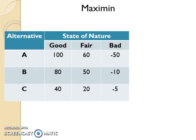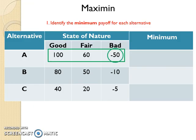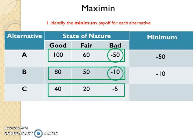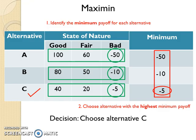To make a decision by using the Maximin method, first add a column to the payoff table, name it as 'minimum', and then identify the minimum payoff for each alternative. For example, for alternative A the minimum payoff is negative 50, so write negative 50 in the minimum column. Do the same for the other alternatives. Among all these minimum payoffs, identify the highest value. Here the highest value is negative 5, therefore the decision is to choose alternative C.